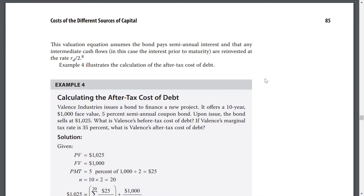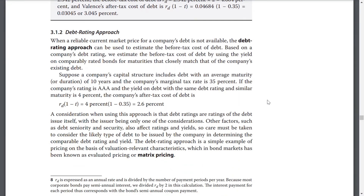The valuation equation assumes the bond pays semi-annual interest and that any intermediate cash flows are reinvested at the rate of RD divided by 2. Example 4 illustrates the calculations of after-tax cost of debt. When a reliable current market price for a company's debt is not available, the debt rating approach can be used to estimate the before-tax cost of debt based on a company's debt rating.